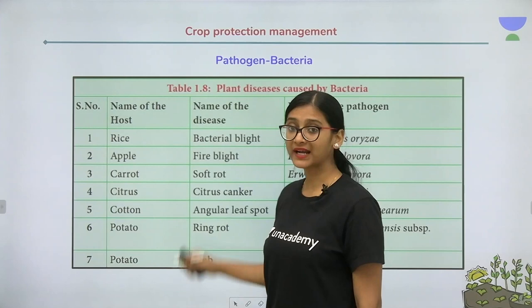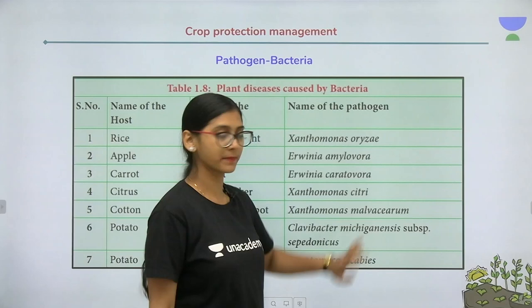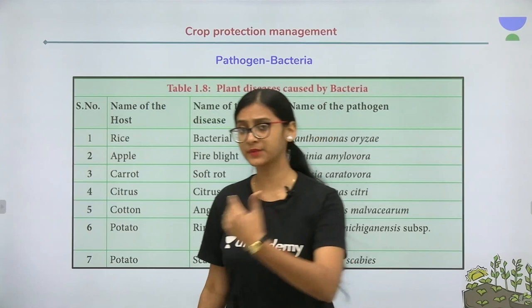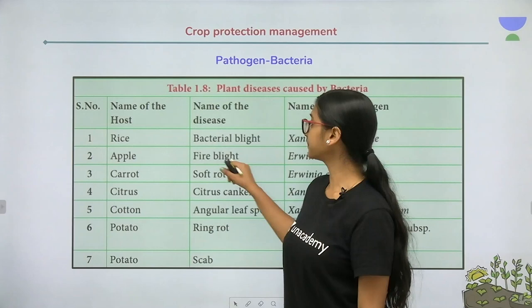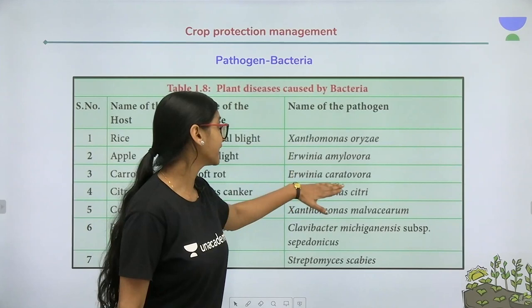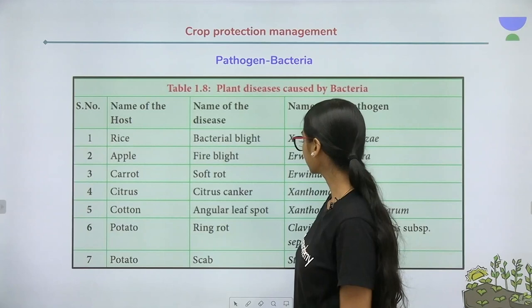Bacterial blight is the disease seen in rice, caused by Xanthomonas oryzae — easy to remember because oryzae sativum is the scientific name of rice. Fire blight is caused in apple by the pathogen Erwinia amylovora. Erwinia carotovora causes soft rot in carrot — easy to remember as 'carotovora' relates to carrot.